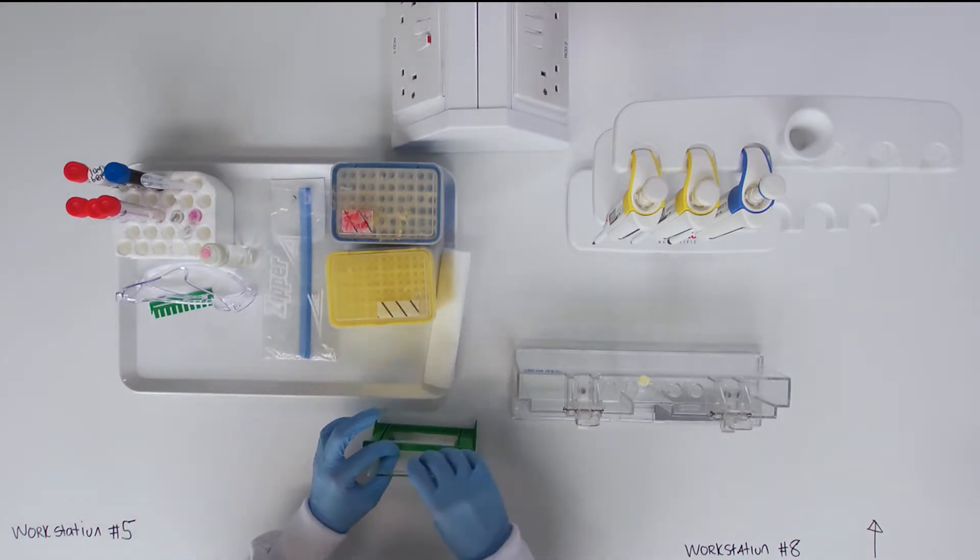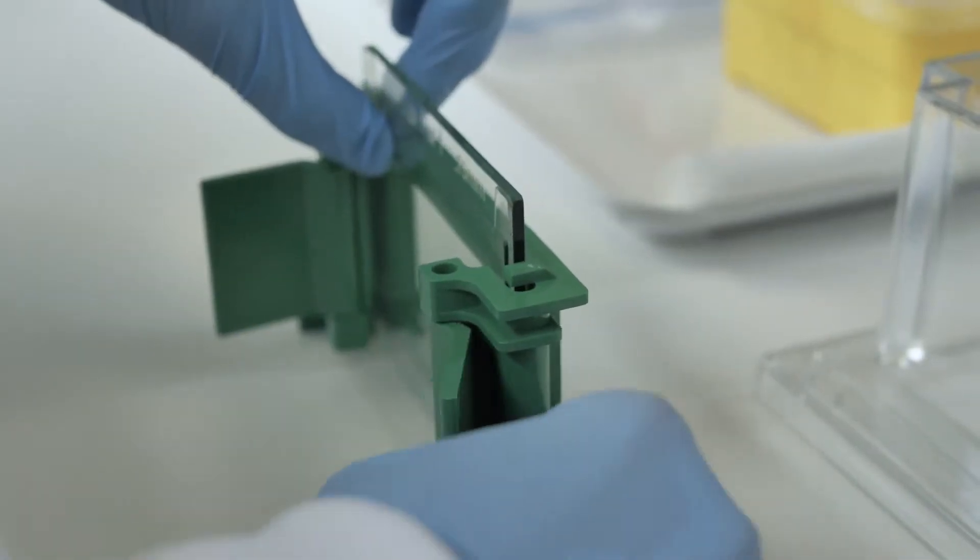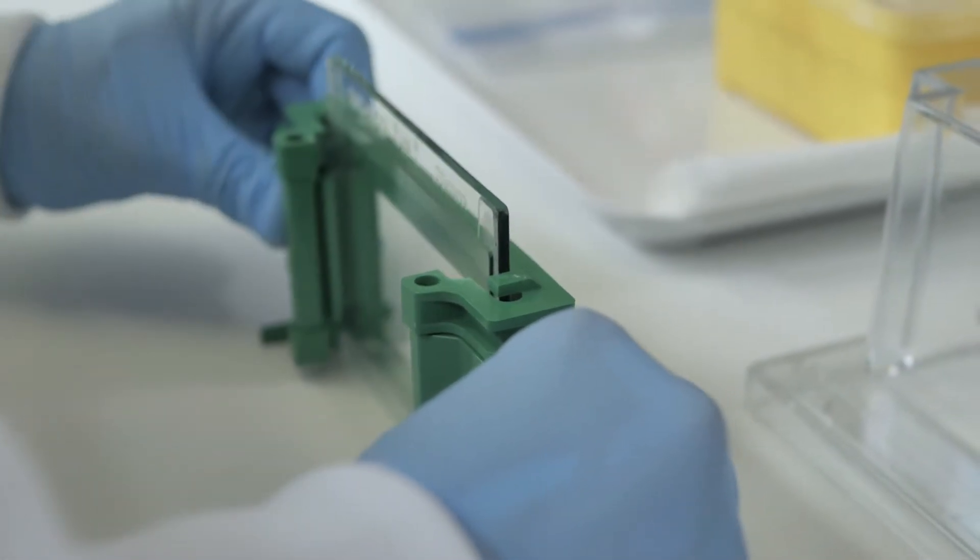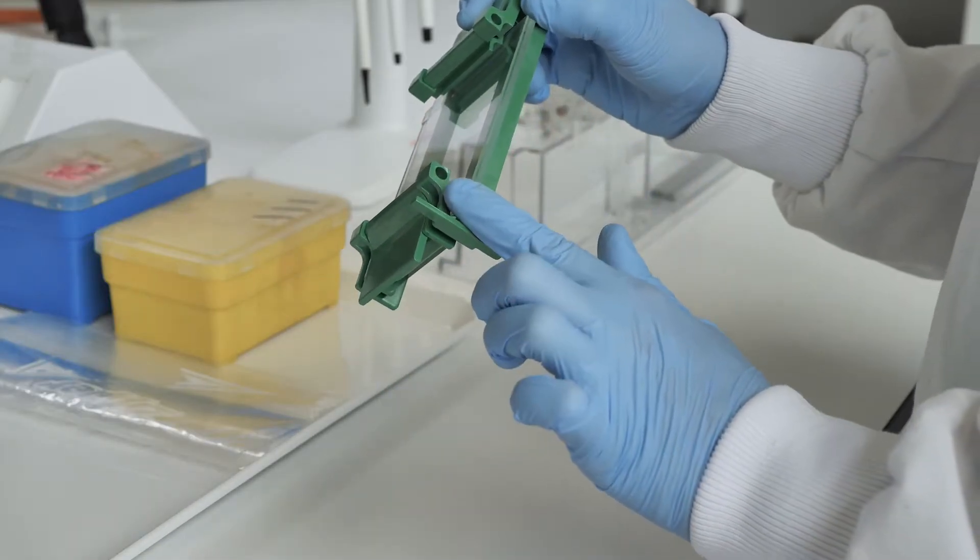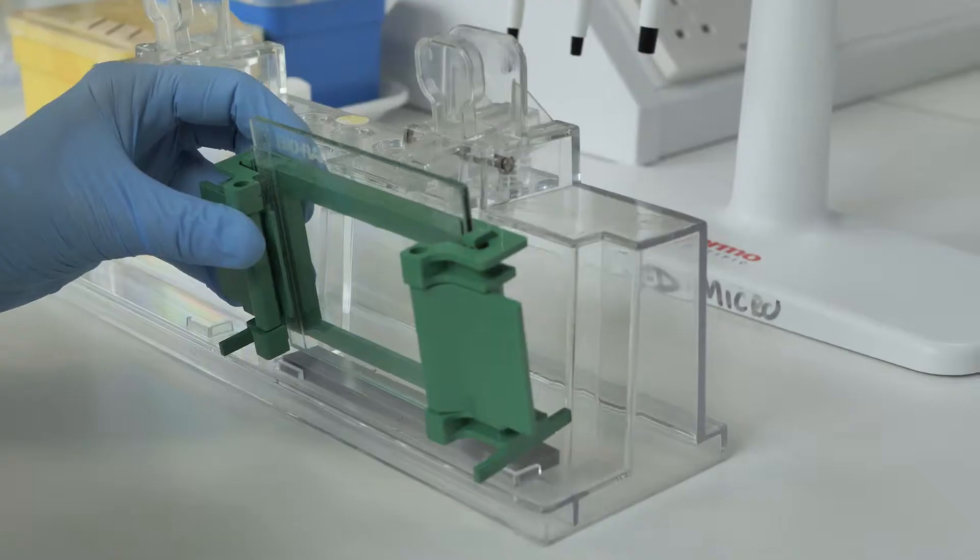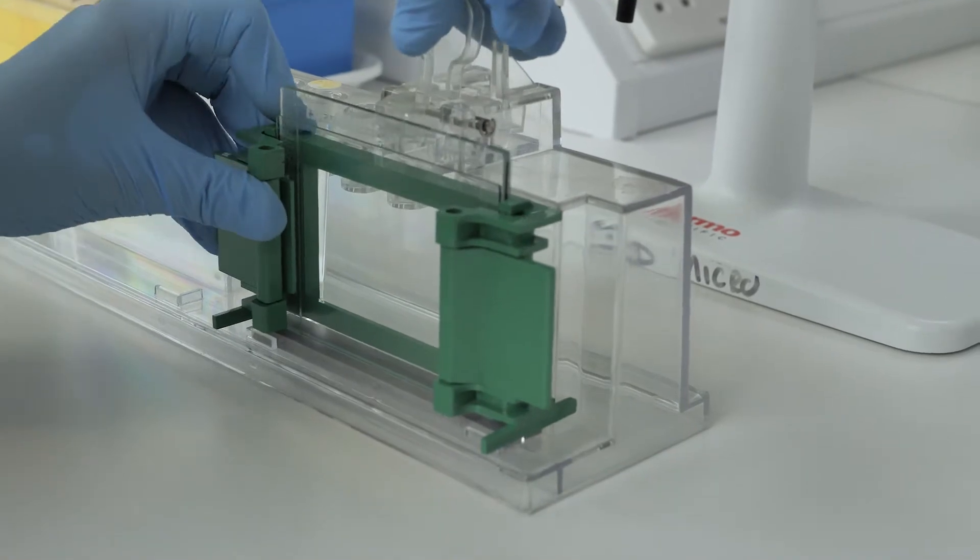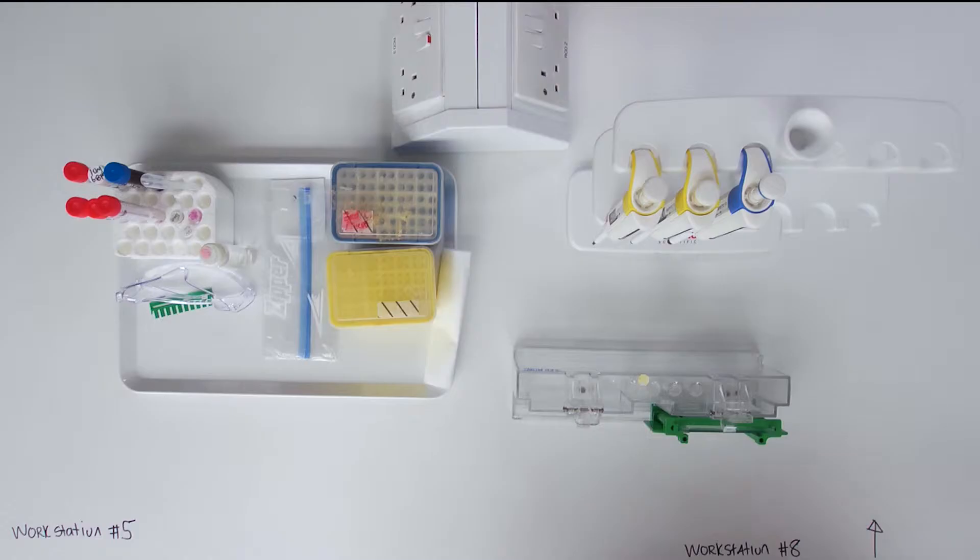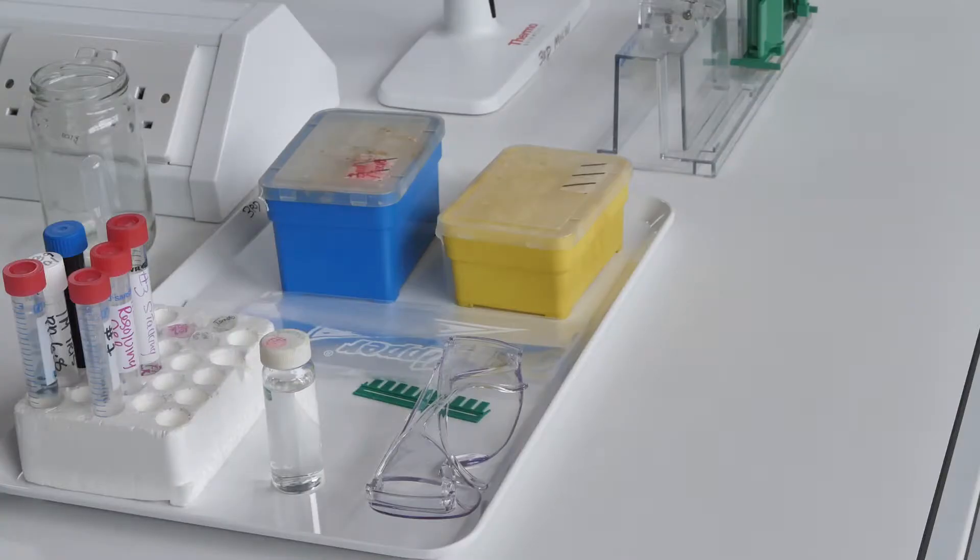Assemble the gel plates by placing a short plate on top of a spacer plate. Insert the plates into the casting frame and clip to secure them. After checking the plates are flush at the bottom, place the frame in the casting stand provided at the side with the grey foam rubber gasket. When the sandwich is ready on the casting tray, you can begin preparing the gel.